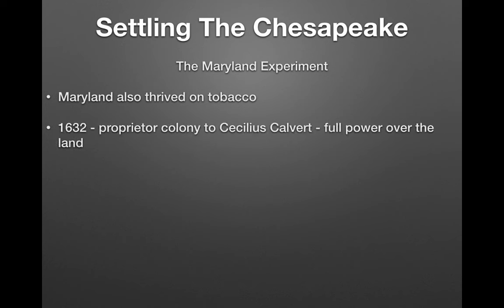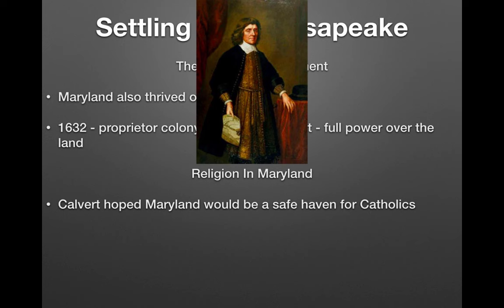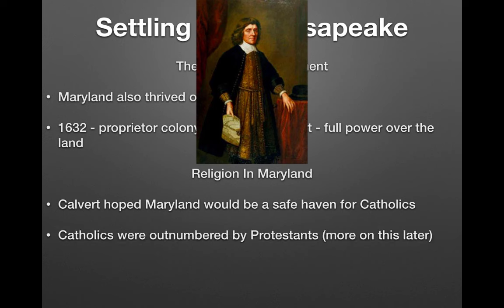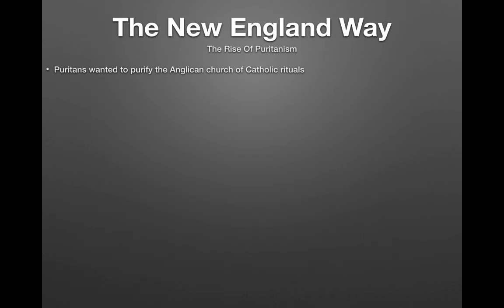Maryland also thrived on tobacco as part of the Chesapeake. In 1632, it was established as a proprietary colony under Cecilius Calvert — Lord Baltimore — who had full power over the land. Calvert was Catholic, unlike other English colonies which were predominantly Protestant. He hoped Maryland would be a safe haven for Catholics, who were outnumbered by Protestants. The death rate in the Chesapeake was astronomically high — about half the people died by age 20.